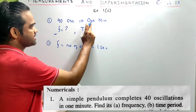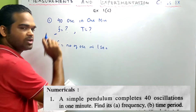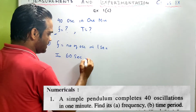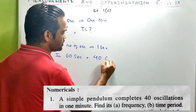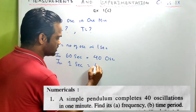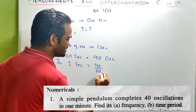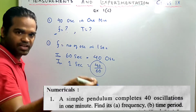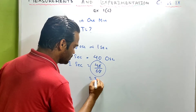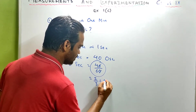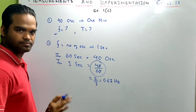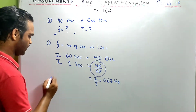We just need to remember the definition of frequency: the number of oscillations in one second. In 60 seconds, the number of oscillations is 40. So in one second, the number of oscillations is 40 by 60. And this is nothing but frequency — that's 2 by 3, which is equal to 0.67 Hz.